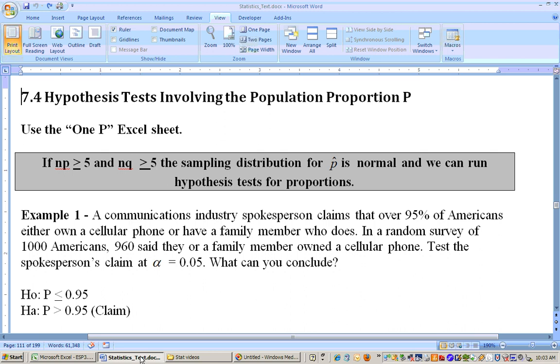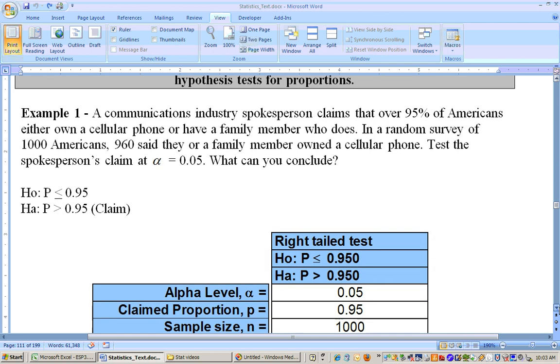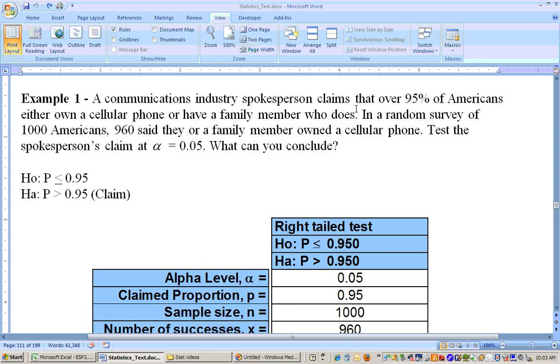Now let's actually do a problem. In this particular problem, a company industry spokesperson claims that over 95% of Americans either own a cellular phone or have a family member who does. In a random survey of 1,000 Americans, 960 said they or a family member owned a cell phone. Test the spokesperson's claim at the 0.05 alpha level. So they sampled 1,000 people and 960 of them said they or a family member own a cell phone.